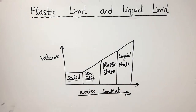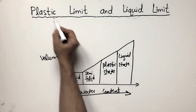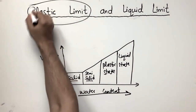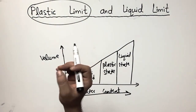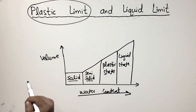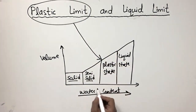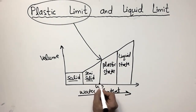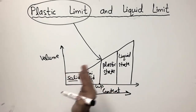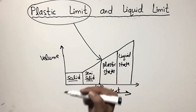Now, what is the difference between the plastic limit and the liquid limit? The plastic limit is the moisture content at which the soil begins to behave as a plastic material. We represent it by WP, which is the plastic limit. This is the moisture content — before this moisture content, it is semi-solid, but at this moisture content, the soil begins to behave as a plastic material.